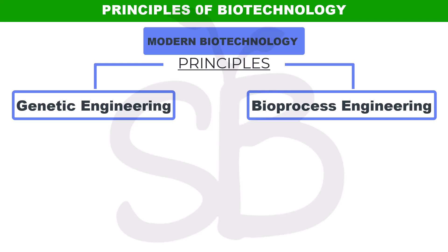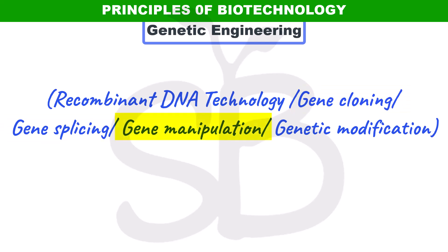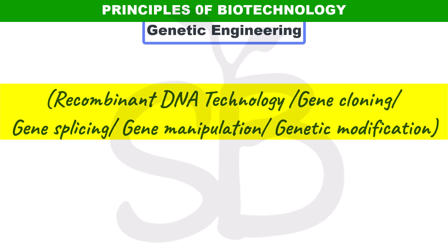This is Genetic Engineering. The first name of Genetic Engineering is Recombinant DNA Technology. It is also called Gene Cloning, Gene Splicing, Gene Manipulation, and Genetic Modification. These are the names of Genetic Engineering.